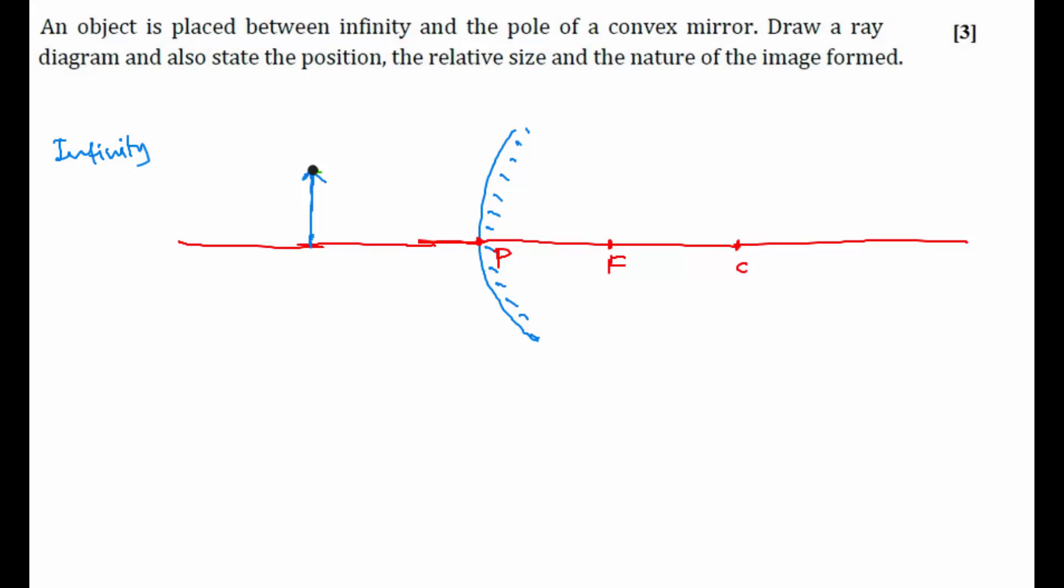One ray I am considering is a ray going parallel to the principal axis. How will its path be after reflection? When you extend its path after reflection, it should meet at focus. So the reflected ray will be something like this, after reflection it will go like this.